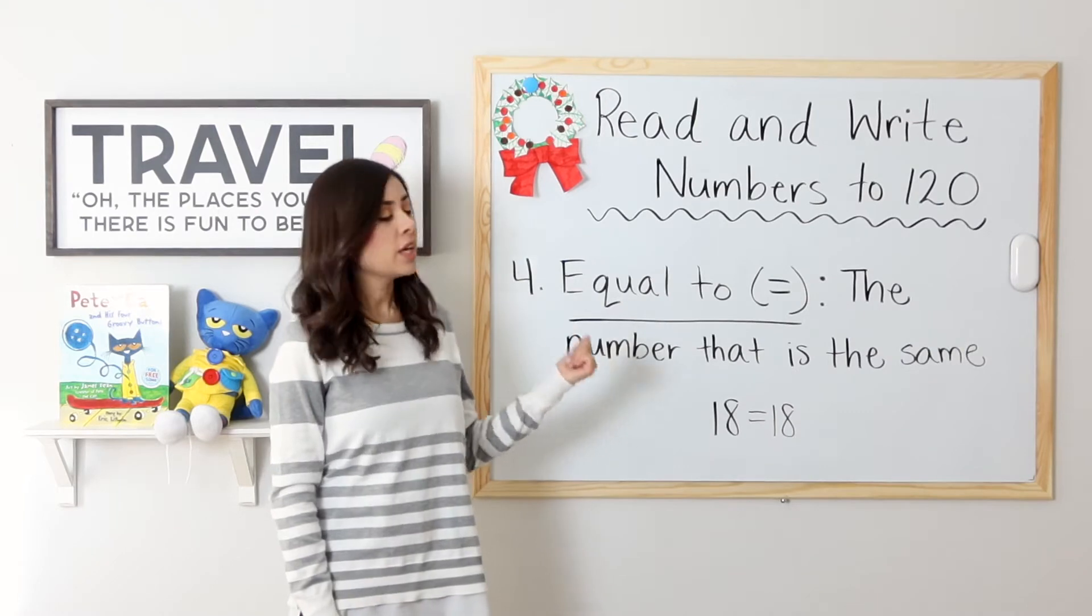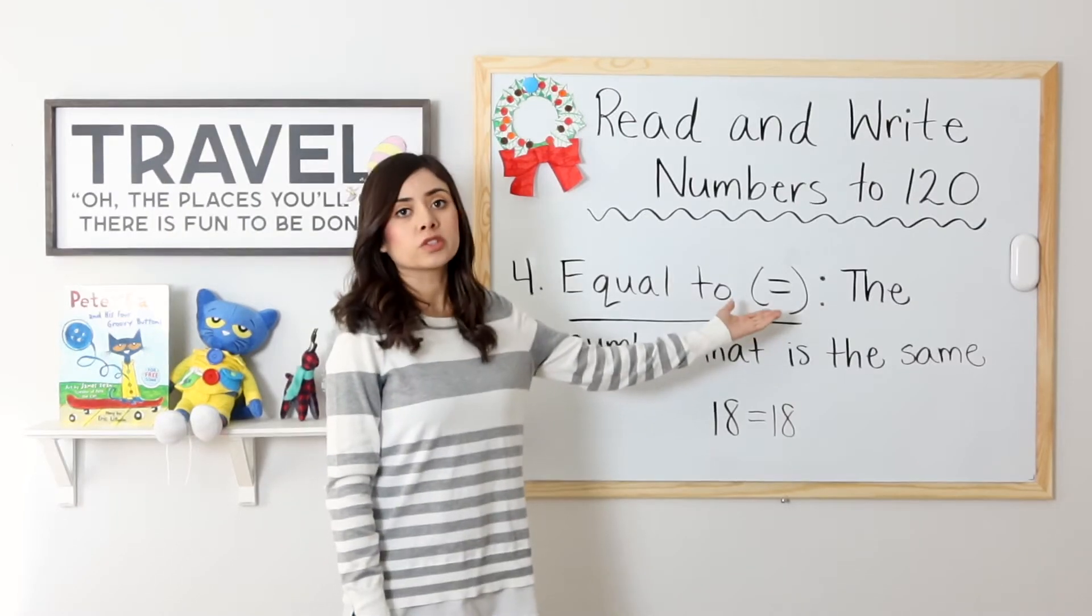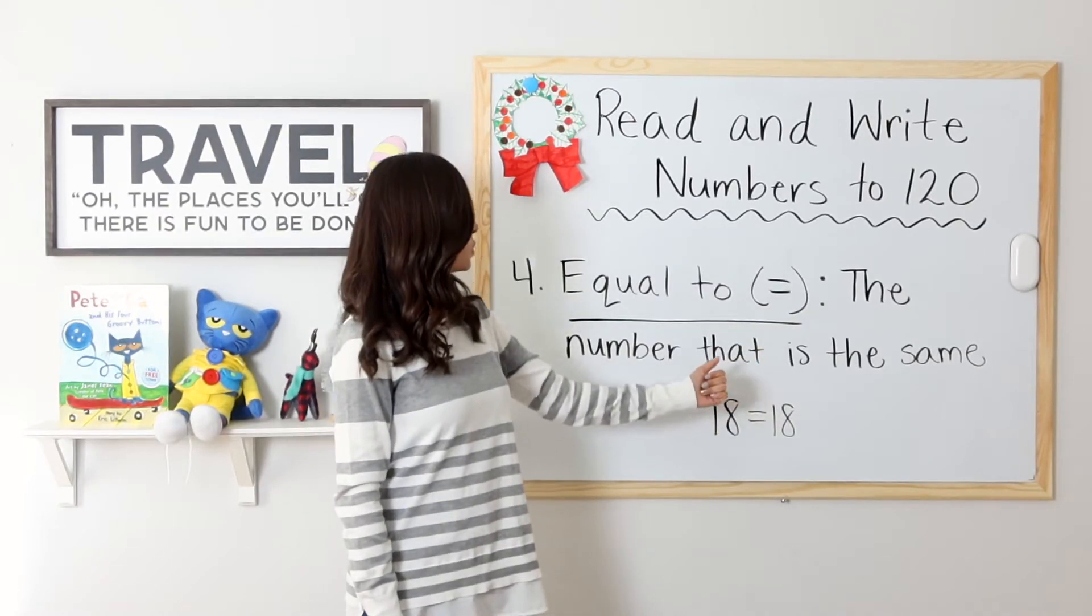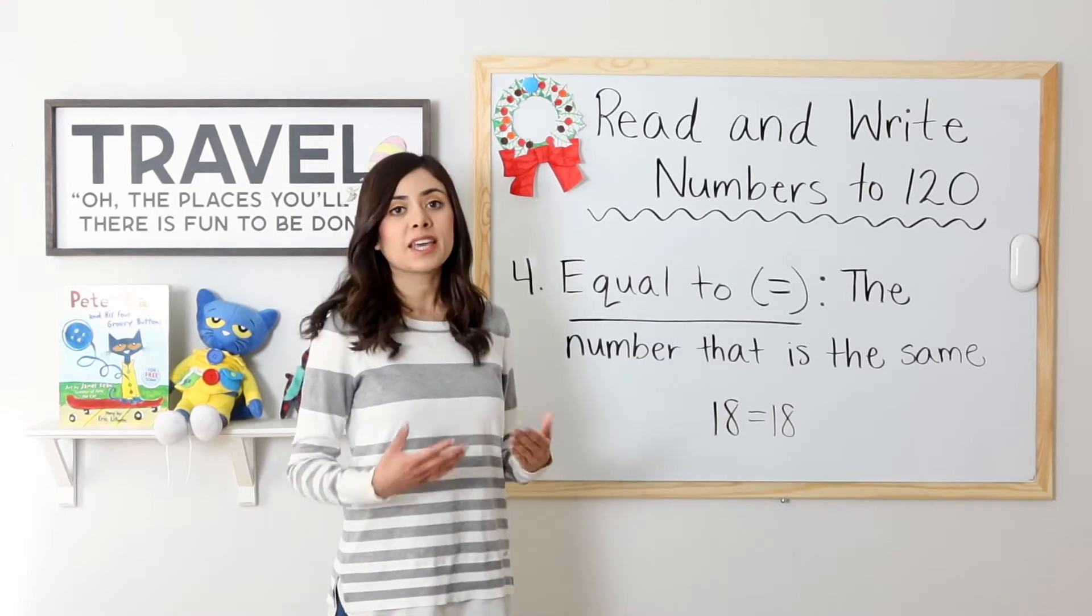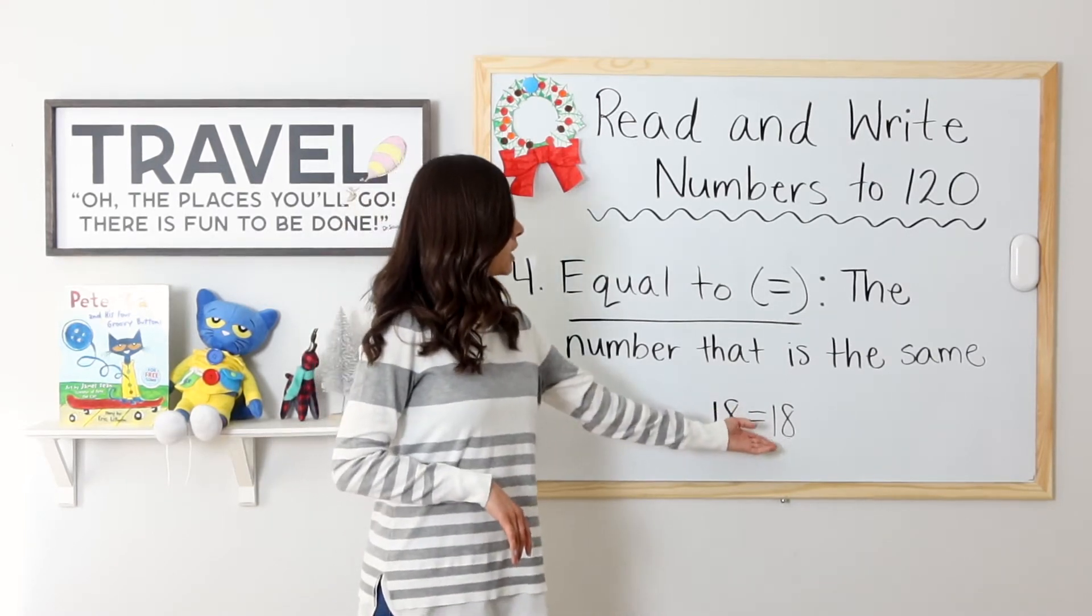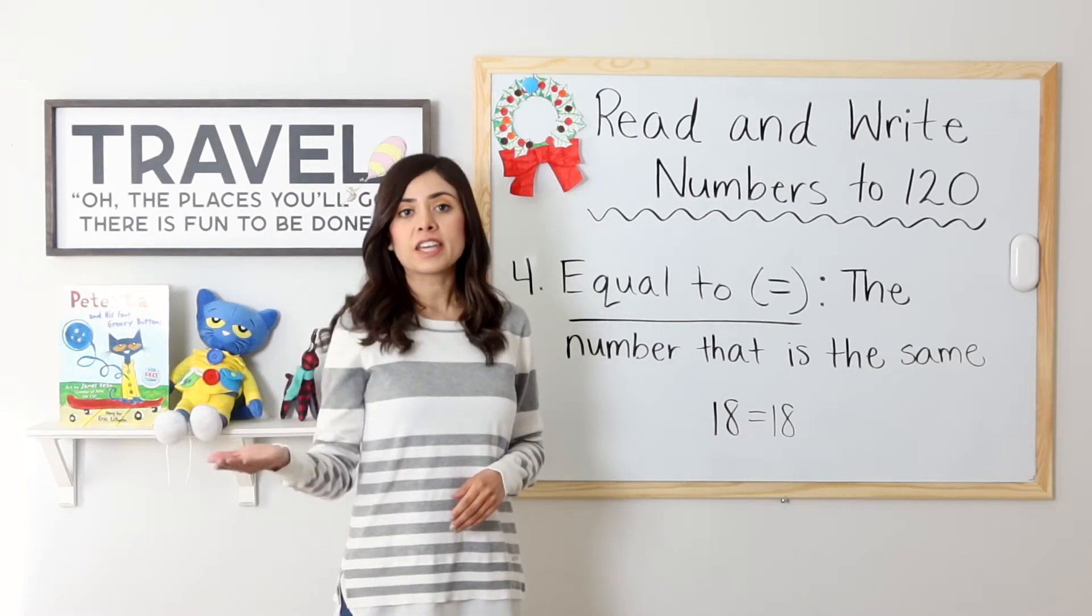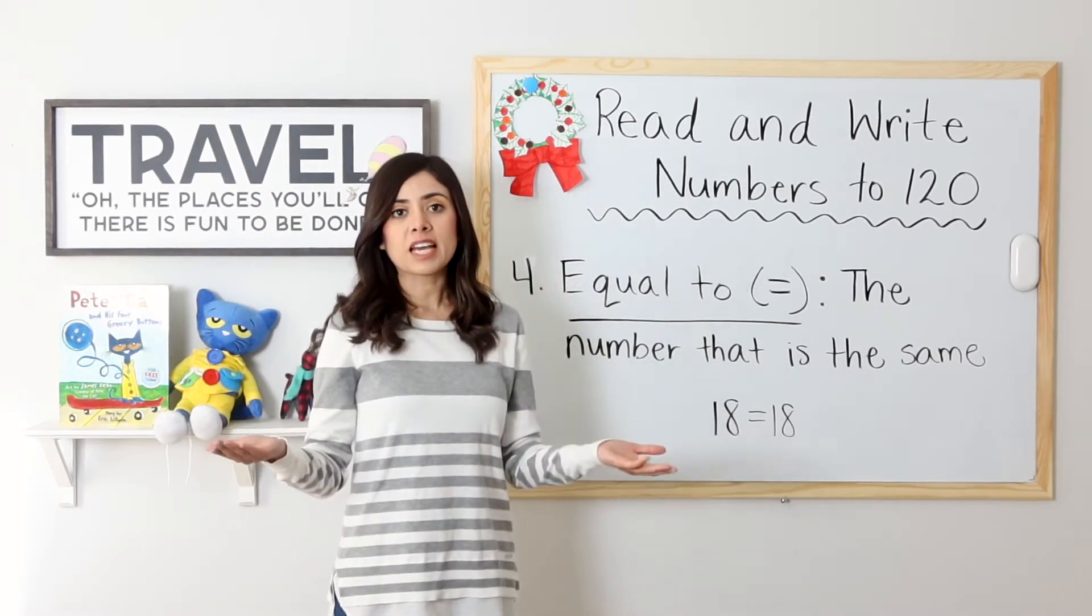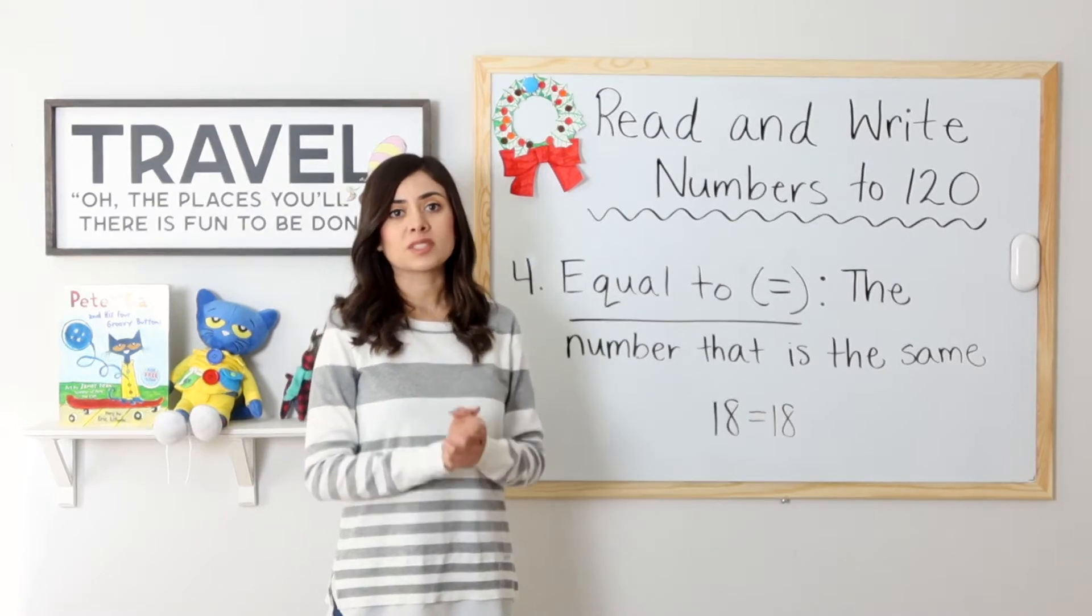Equal to. Here is the symbol for equal to. Equal to refers to the number that is the same. For example, 18 is equal to 18. If I have 18 apples and my friend has 18 apples, we have the same amount.